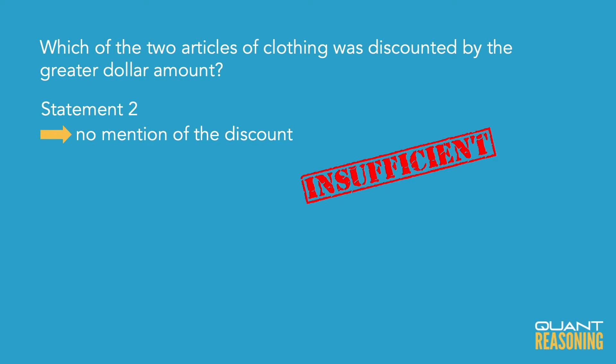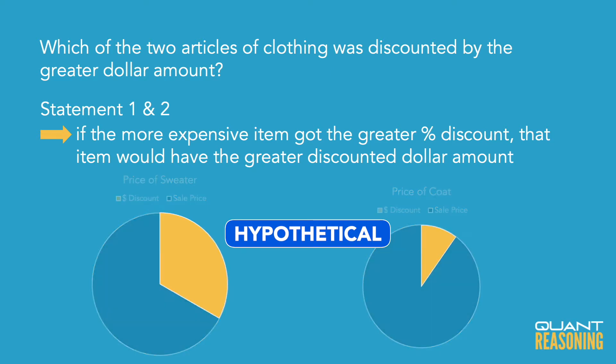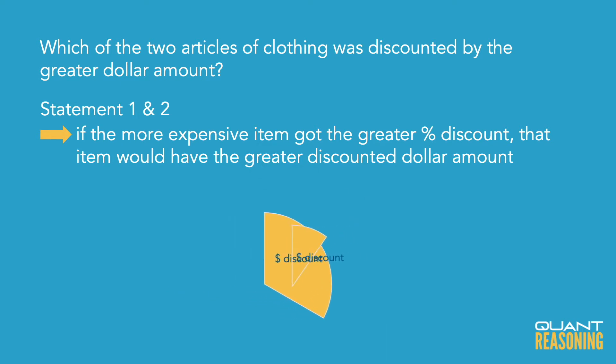Now here's what I'm thinking when I combine the statements. If the item that was more expensive in the first place also got the greater percent discount, then that's the item on which I would save more dollars, because it's a greater percent and that percent is of a greater whole. So both of those indicate that yes, that discount will be worth more dollars than the smaller percentage discount on the cheaper item.